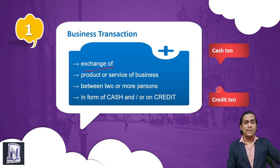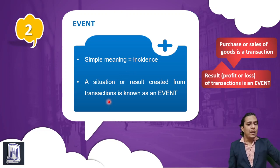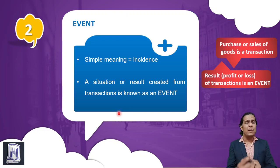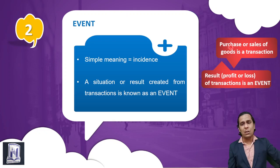The next word is 'event.' In accounting, event has a slightly different meaning. A situation or result created from transactions is known as an event. So if you are buying goods, selling goods, making incomes, or incurring expenses, whatever result you get from all these transactions — that is an event. For example, purchase or sale of goods is a transaction, but the result — profit or loss — is an event.